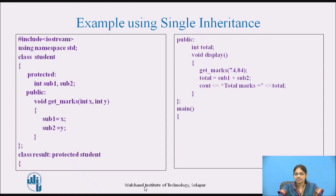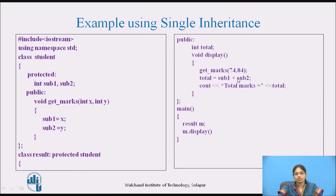In the main function, we create an object for the class result and using the object and dot operator, we call the member function display. This in turn calls the getmarks function, assigns 74 to subject1 and 84 to subject2, calculates the total of the two subjects, and displays the total marks.